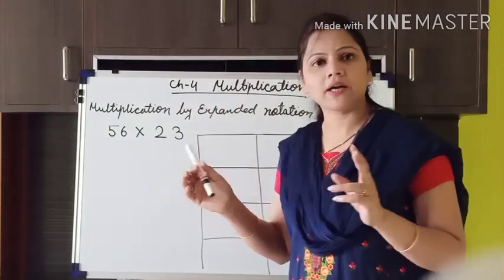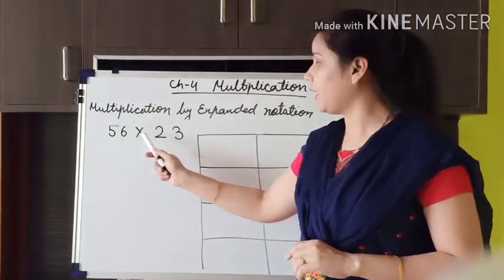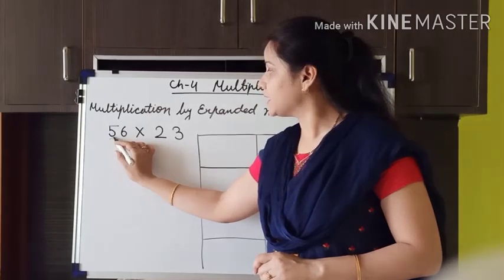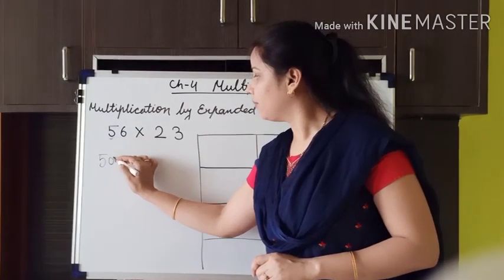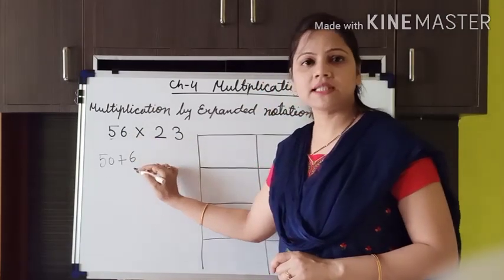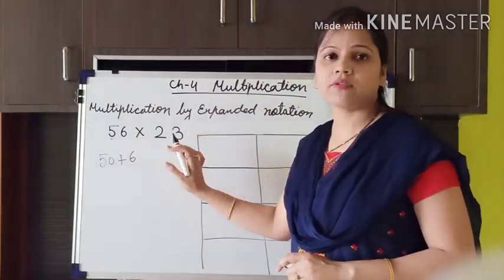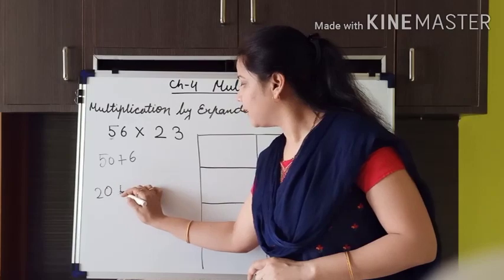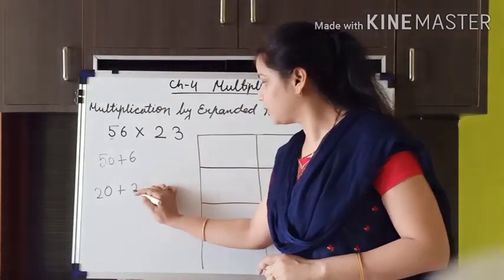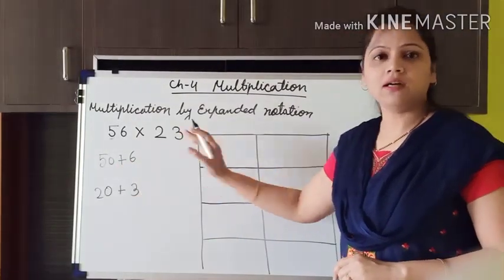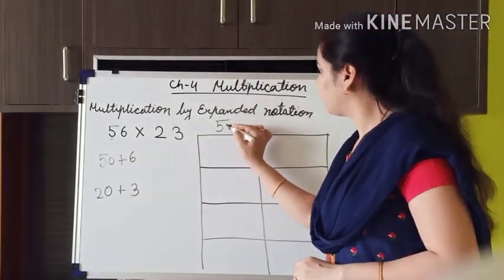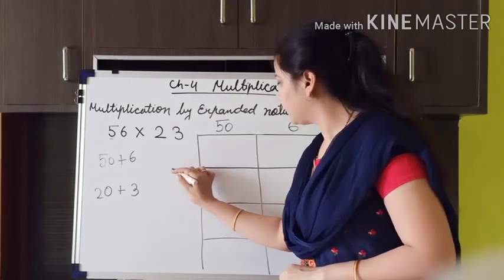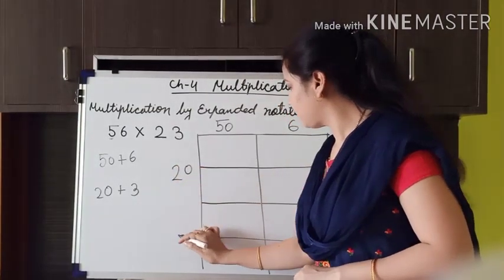Here both the factors are 2-digit numbers, so we have to break both numbers. How do we break 56? The place value of this 5 is 50, plus 6 — the place value of 6 is 6. And if we break 23 into place values: the place value of 2 is 20, plus the place value of 3, which is 3. So now we arrange the numbers: we write 50 here and 6 here on top, and 20 here and 3 here on the side.